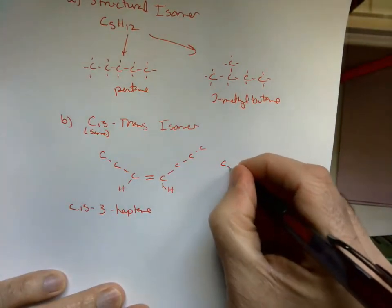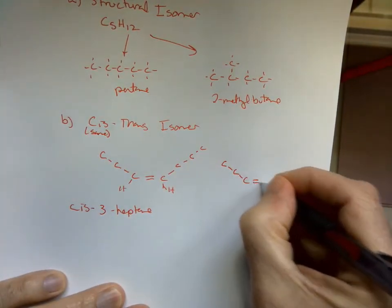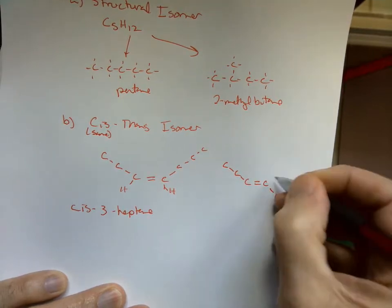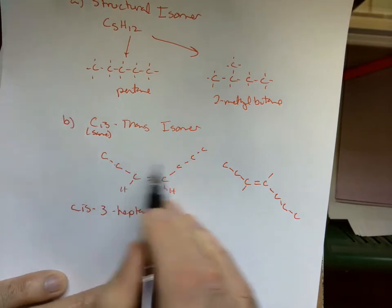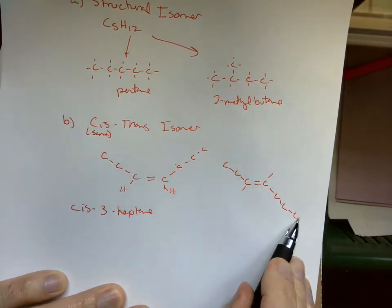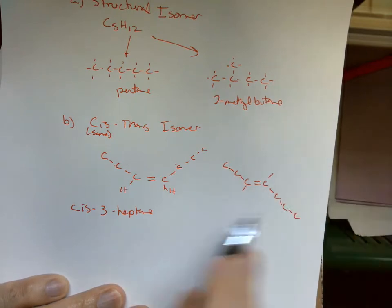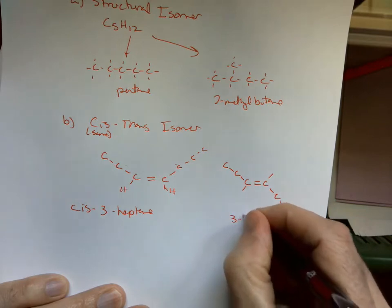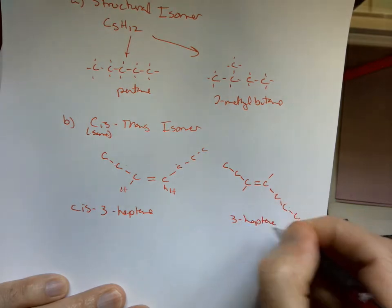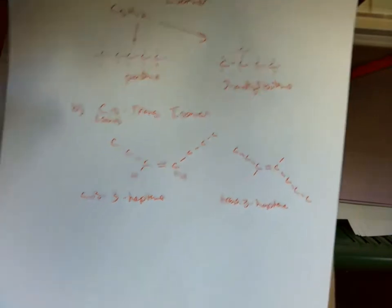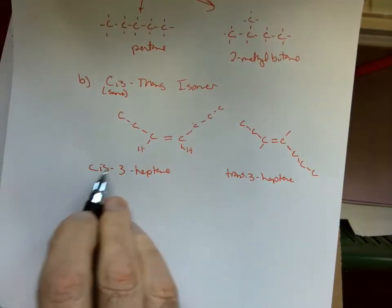So how would that look if it was trans? Trans will tell you that it's going in the other direction. Where cis is same direction, trans is different directions. So the carbon chains could be going like this or like this. One is up, one is down. Whereas here both are up, so this would be, once again, 3-heptene, and this would be a trans structure. Make sure that you've got a dash anytime you've got a name to a number here.